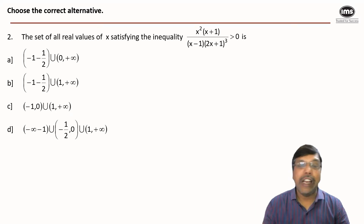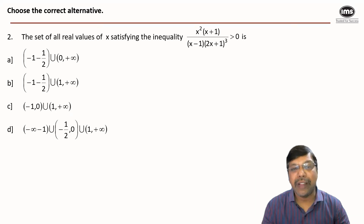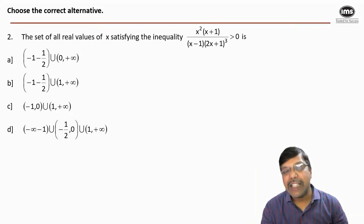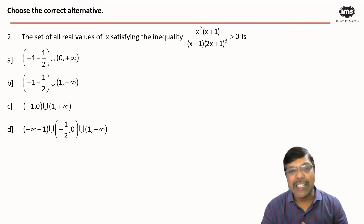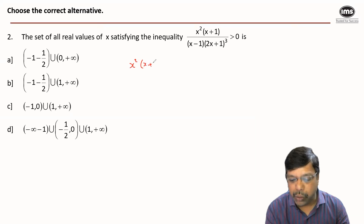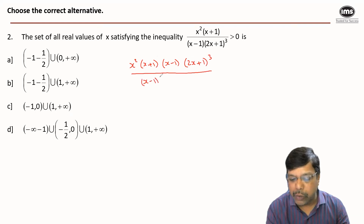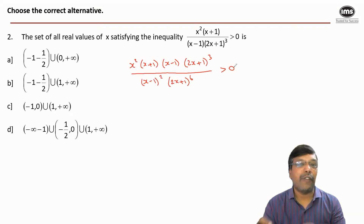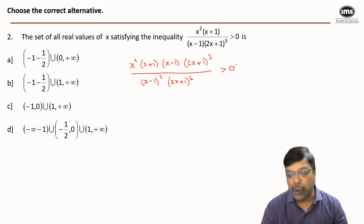We need to find the set of all real values of x satisfying the given inequality. I'll show both the conventional method and a smart shortcut. When I multiply the entire inequality by (x - 1)(2x + 1)³, we get x²(x + 1)(x - 1)(2x + 1)³ divided by (x - 1)²(2x + 1)⁶ greater than 0. Irrespective of the value of x, the denominator (x - 1)²(2x + 1)⁶ is always positive.